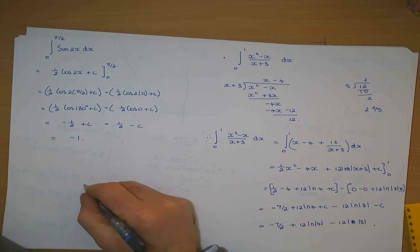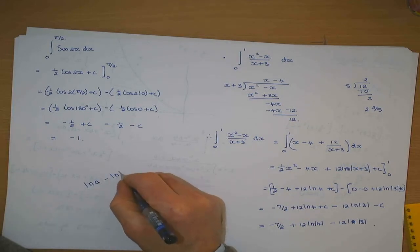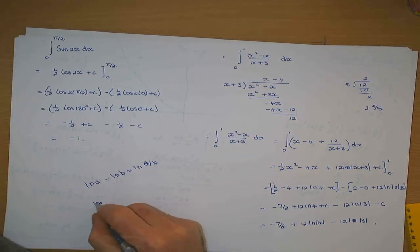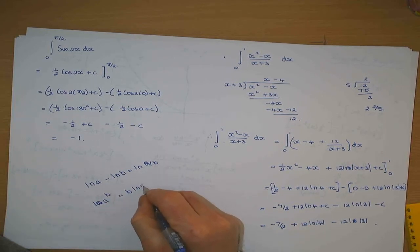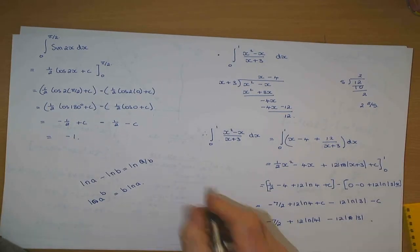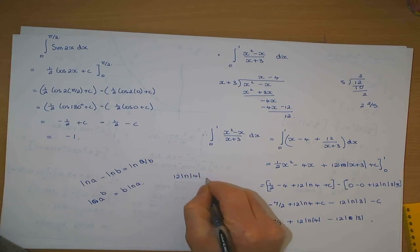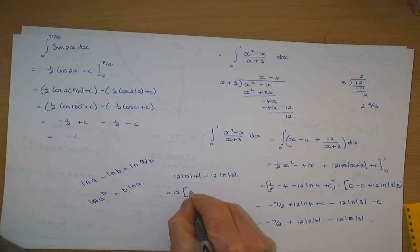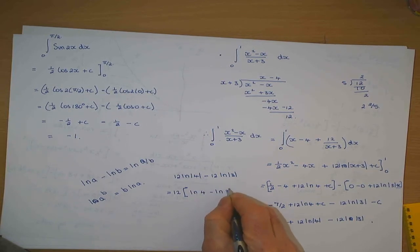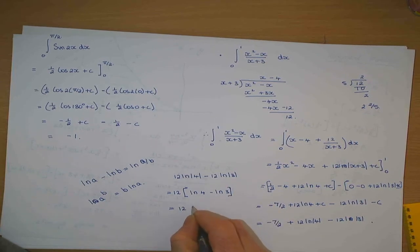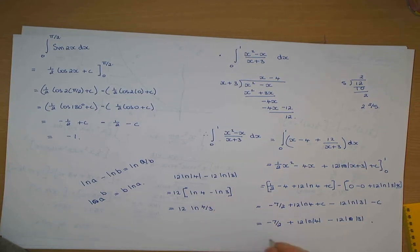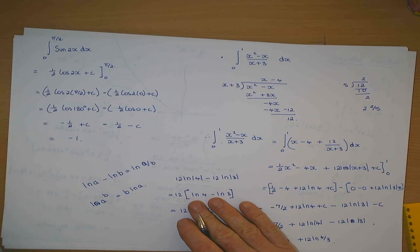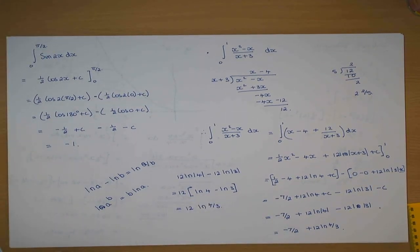Now, the log of A minus the log of B is the log of A over B. And the log of A to the power of B is B times the log of A. So to simplify 12 times log 4 minus 12 times log 3, take the 12 outside first, giving 12 times the quantity log 4 minus log 3, which equals 12 times the log of 4 over 3. So the final answer is minus seven over two plus 12 times the log of 4 over 3.